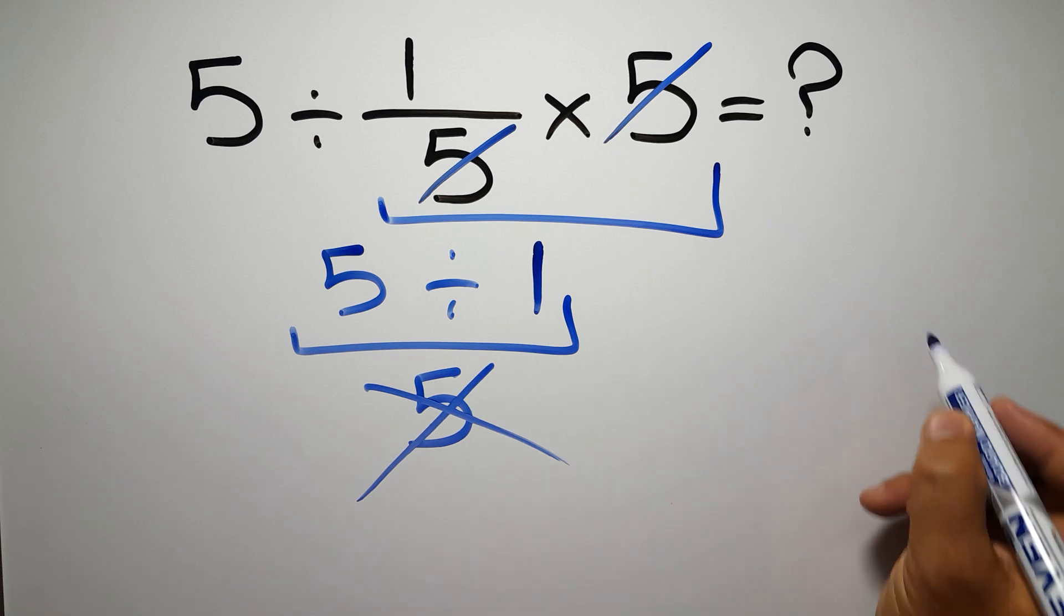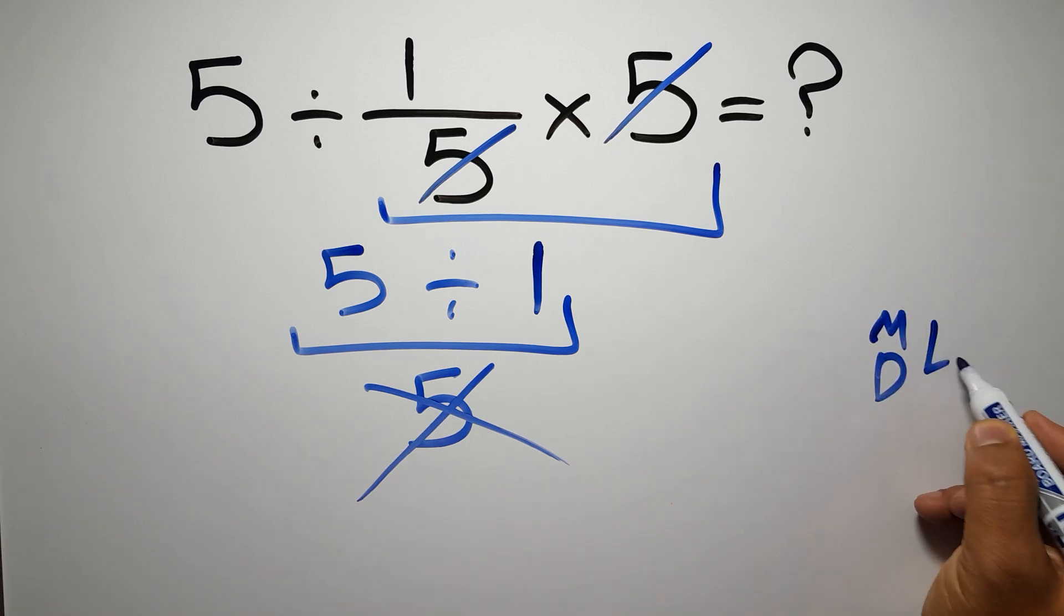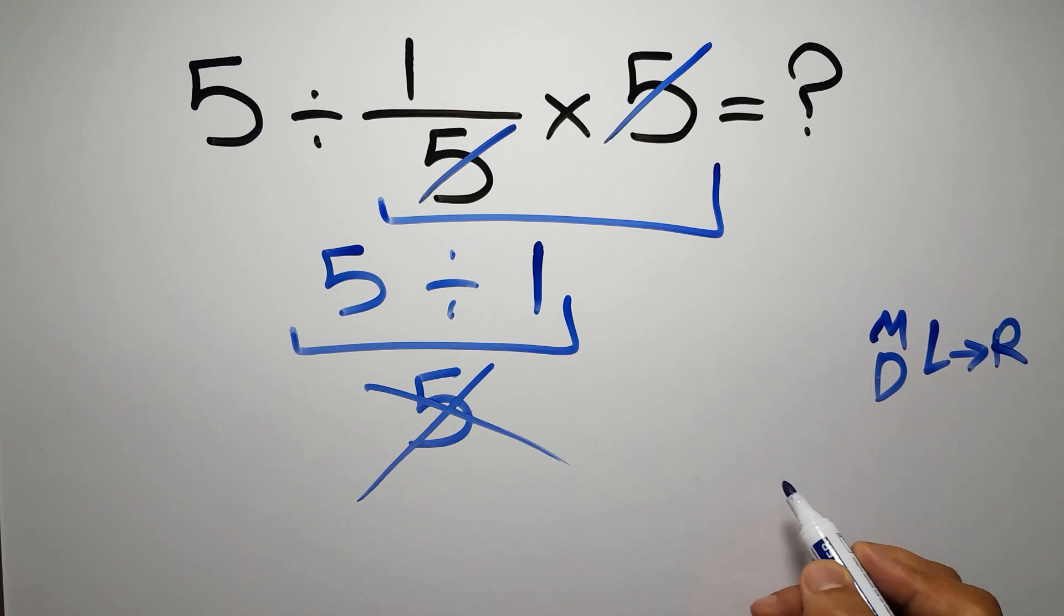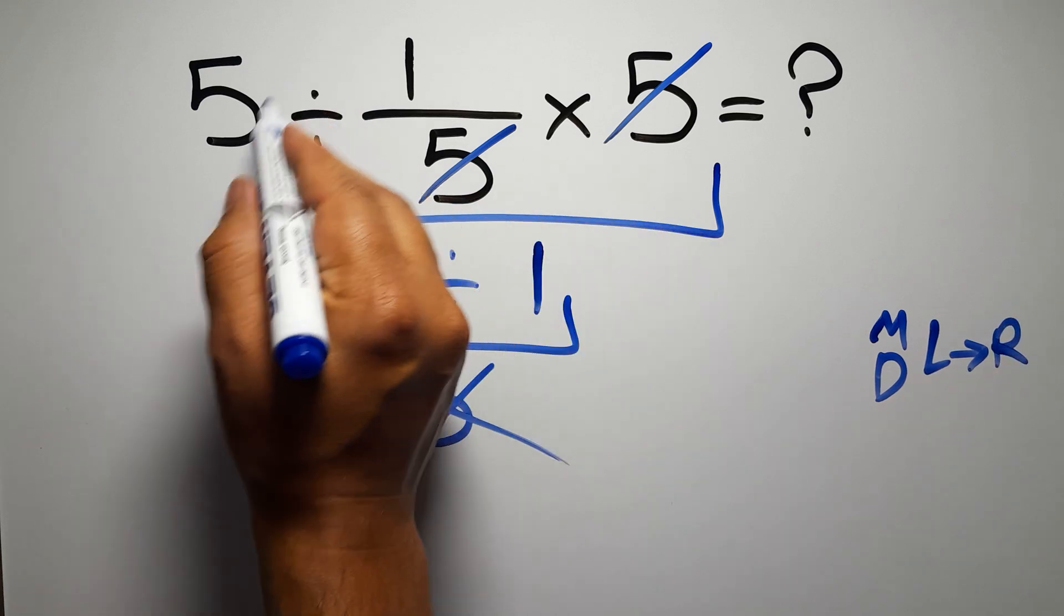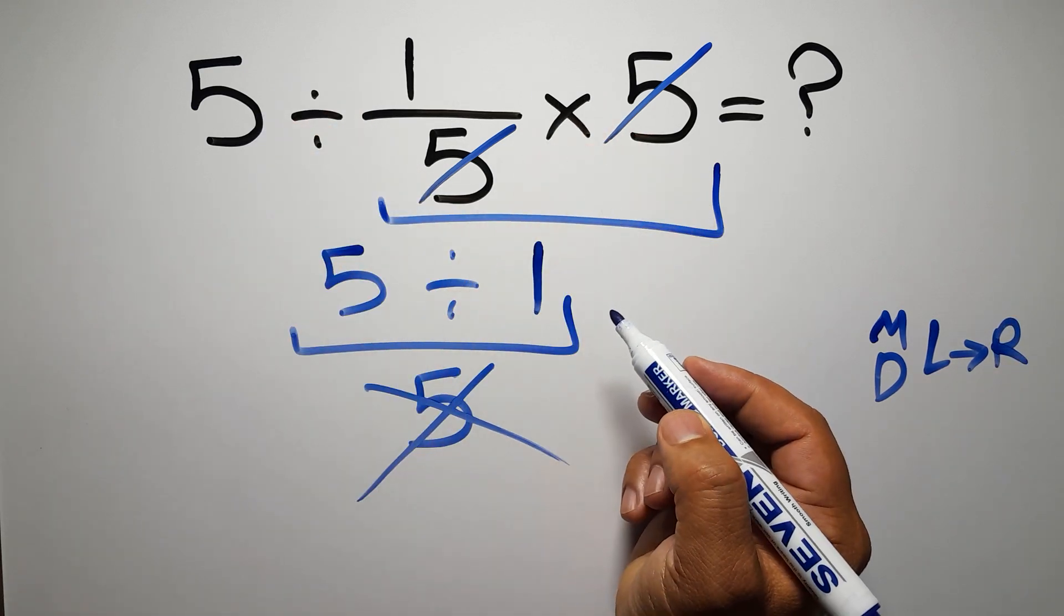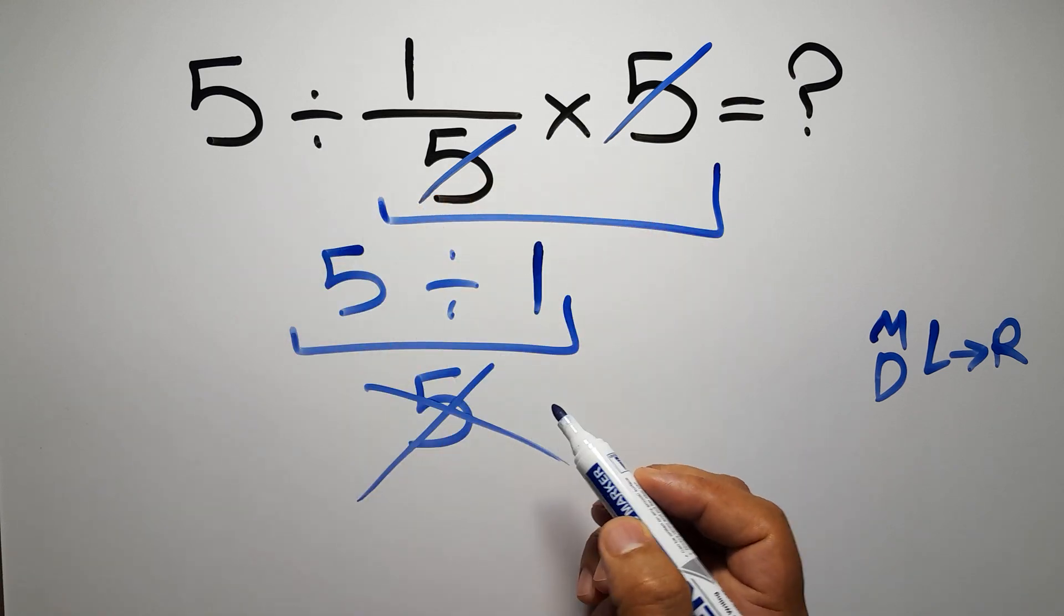According to the order of operations, multiplication and division have equal priority, and we have to go from left to right. So here, first we have to do this division, then this multiplication. If we do this multiplication before this division, it is wrong.